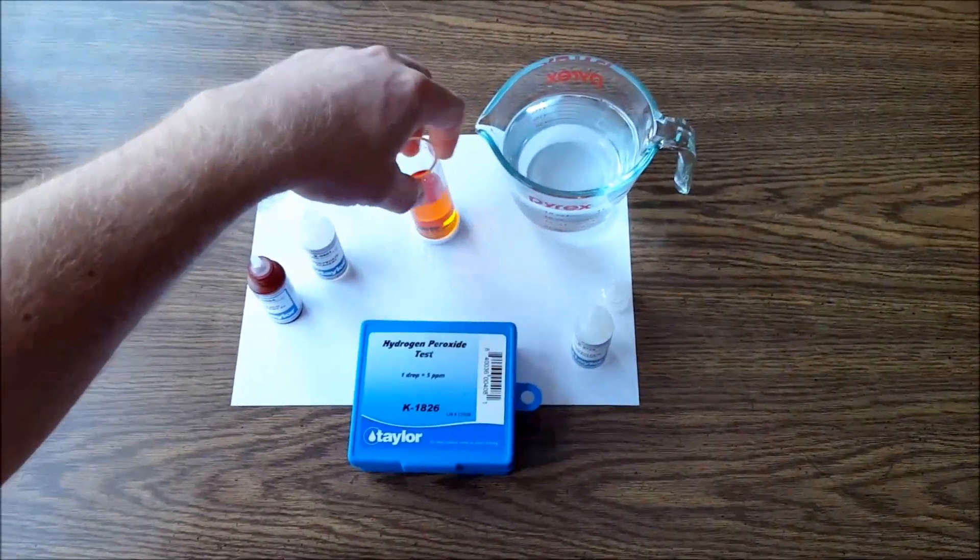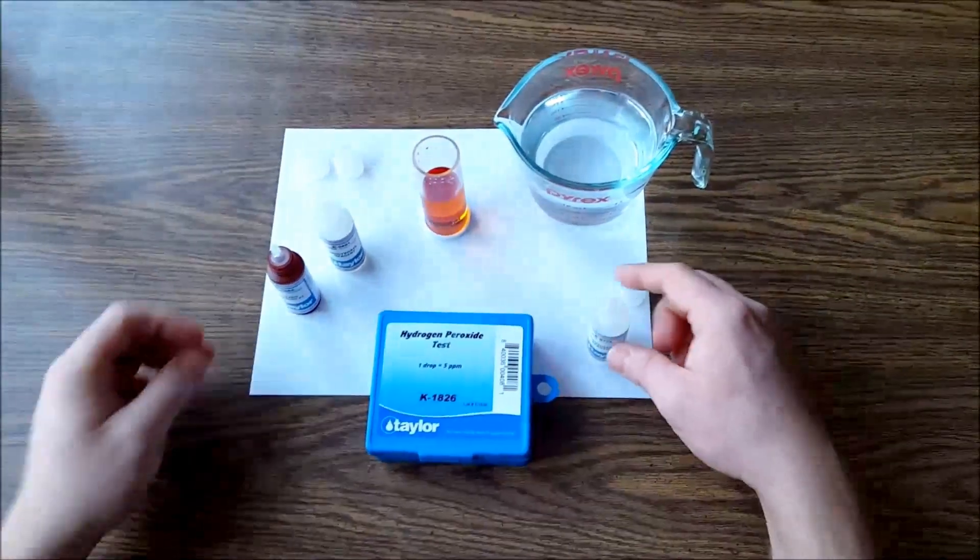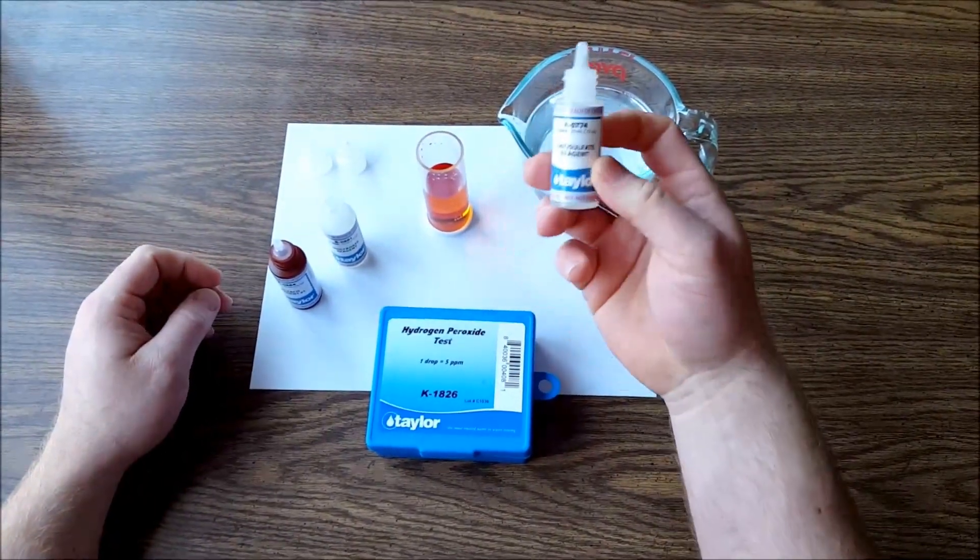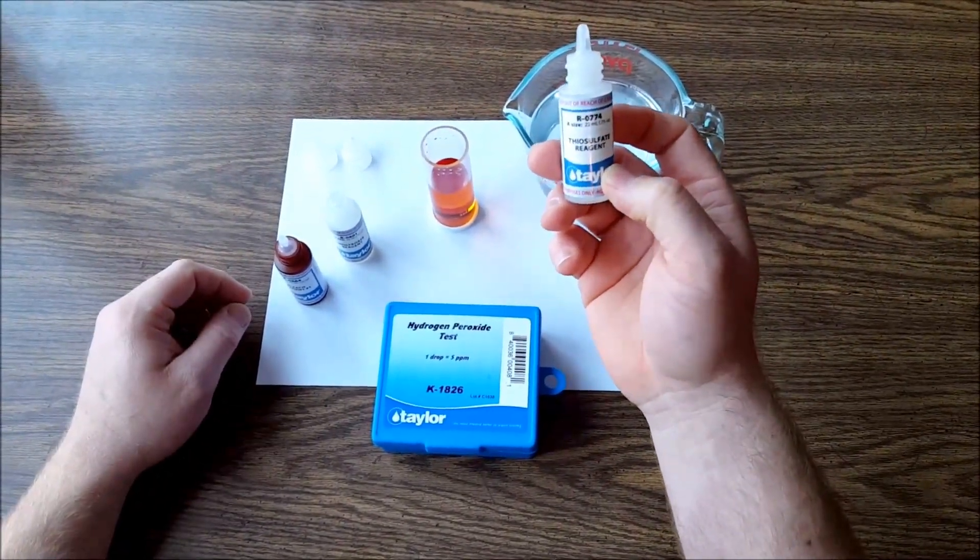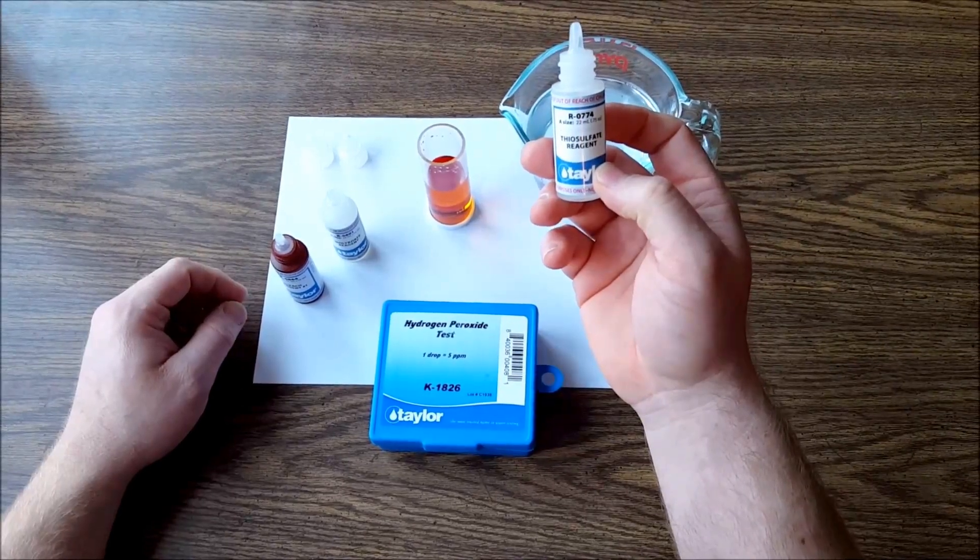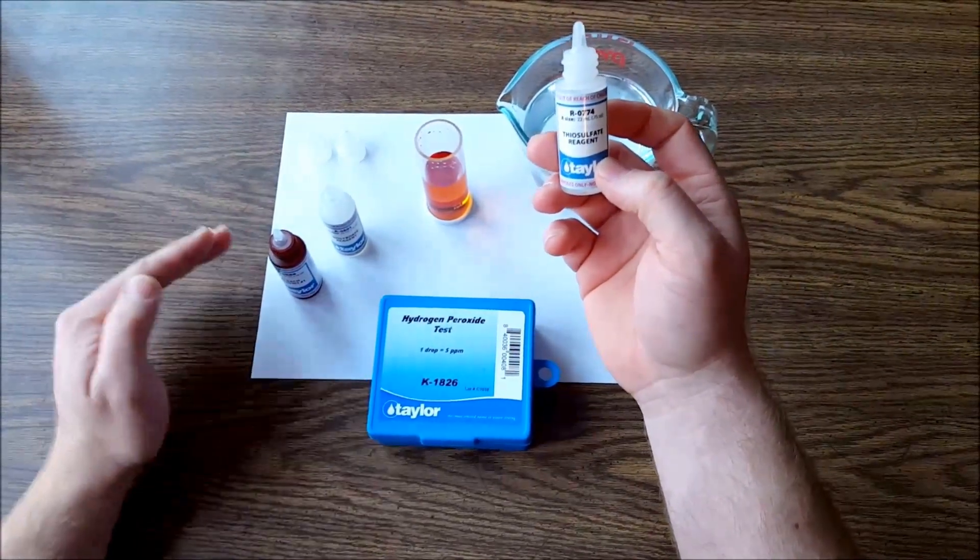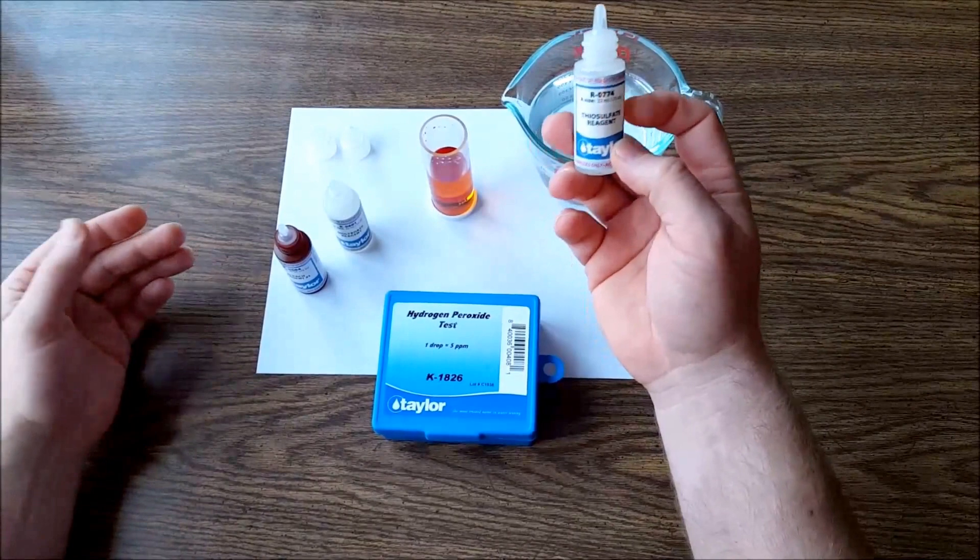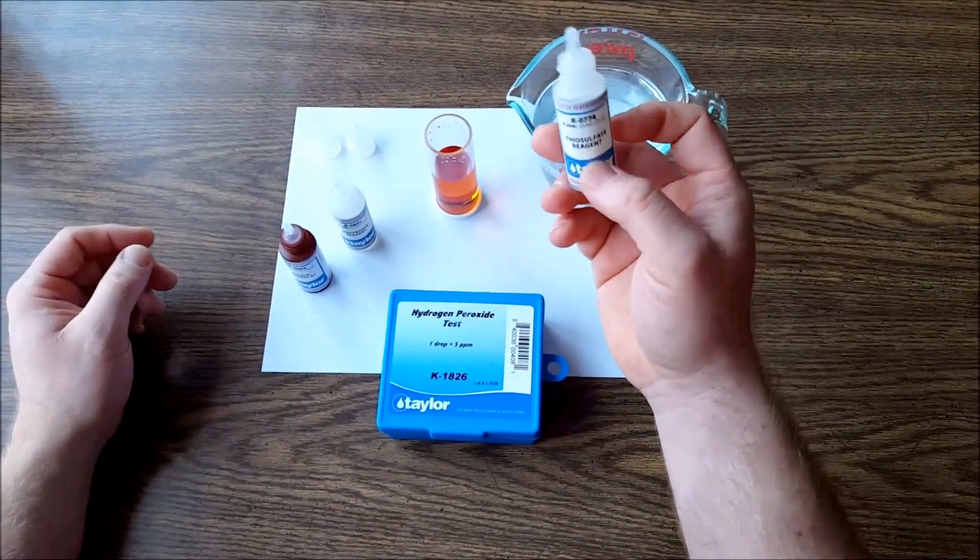And that's how you can go to the last step, which is to add your thiosulfate reagent. And how this works is for every drop of thiosulfate reagent that you put inside of it, it's gonna equal 5 parts per million. So if I was to put 10 drops of this in there, that would equal 50 parts per million.